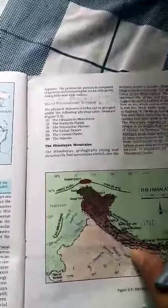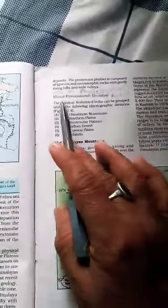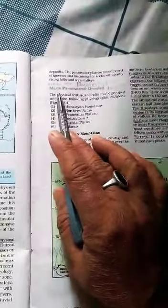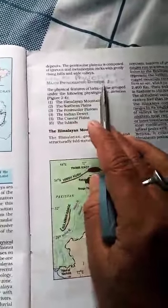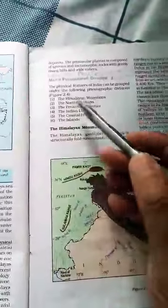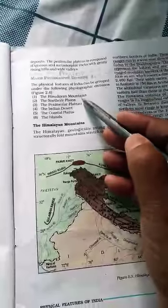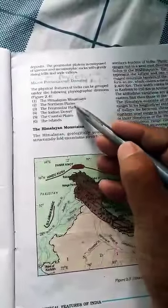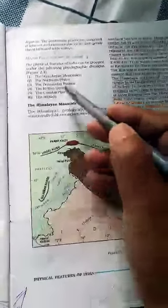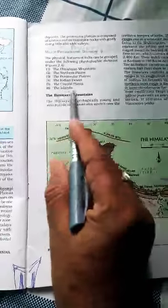The major physiographic divisions are: the physical features of India can be grouped under the following divisions: Himalayan mountains, northern plains, peninsular plateau, Indian desert, coastal plains, and islands.